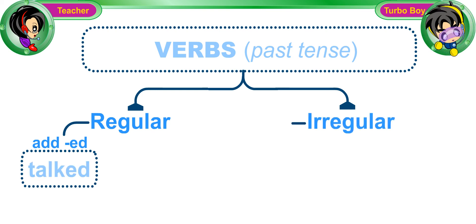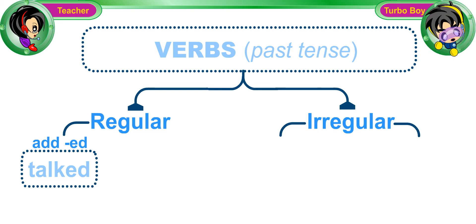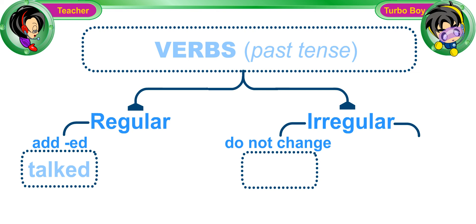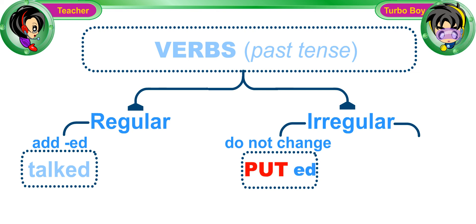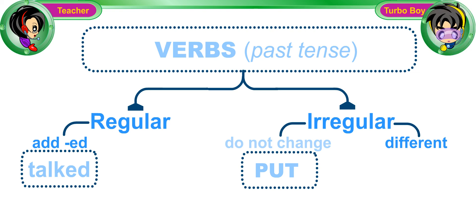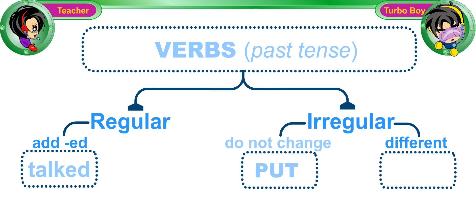There are two types of irregular verbs. Some irregular verbs do not change when made into the simple past. For example, the past tense of the verb put is still put. The other type of irregular verbs has a different spelling when they are in simple past form. For example, the past tense of the verb sit is sat.